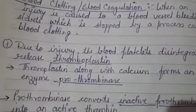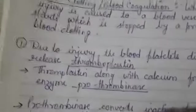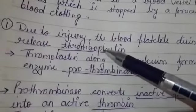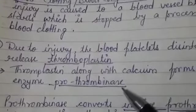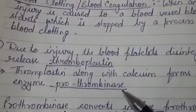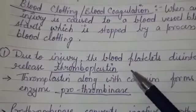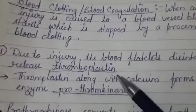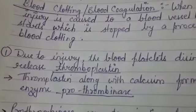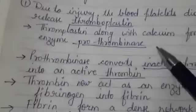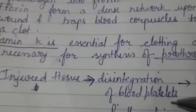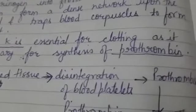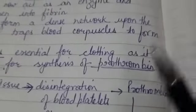When blood platelets are injured, they release a substance called thromboplastin. Thromboplastin, along with the mineral calcium and a few proteins, forms an enzyme called prothrombinase. As we can see in the flow chart: injured tissue causes disintegration of blood platelets, and these disintegrated platelets along with calcium and proteins form prothrombinase.